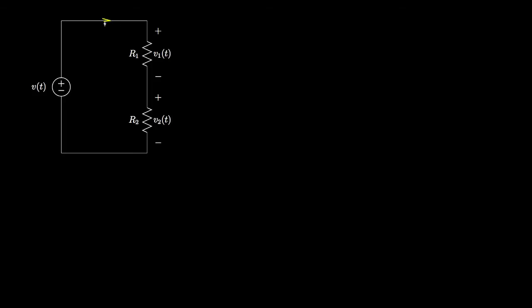Let's begin by looking at a simple circuit that has a voltage source applied across a series combination of two resistors and let's see if we can determine the voltage across each resistor. To analyze this circuit, the first thing I'll do is define the current that flows through this simple closed loop as I of t. Now if we knew I of t we could use Ohm's law to write down an expression for the voltage on each resistor.